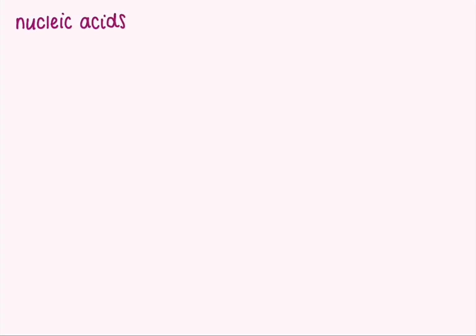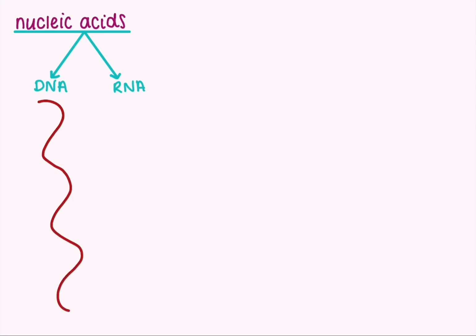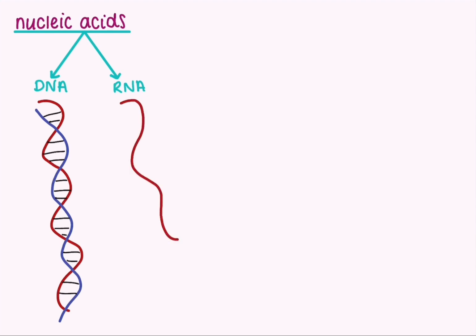Nucleic acids are a really important subsection of the biological molecules topic. We have two types of nucleic acid that we need to know about: DNA and RNA. DNA you have definitely heard of before and probably seen it represented as its unique double helix structure. RNA, the less commonly known type of nucleic acid, is a carrier molecule — it carries information. It is a single-stranded, much shorter molecule than DNA.